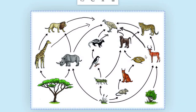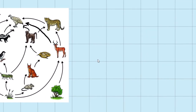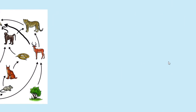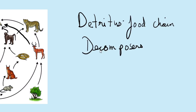Thus, in an ecosystem, various food chains are linked together and intersect each other to form a complex network called a food web. One thing not yet mentioned is decomposers — they form part of another separate food chain called the detritus food chain, and they occupy the first trophic level of that particular food chain.